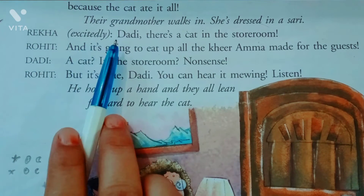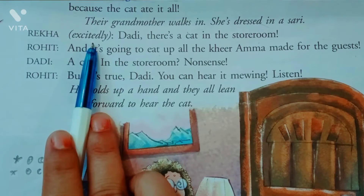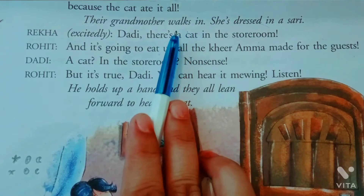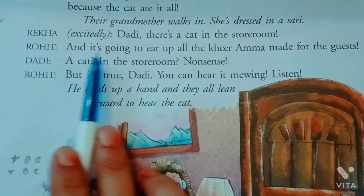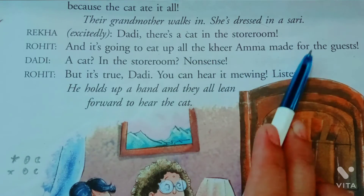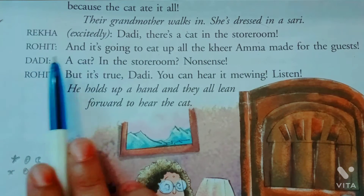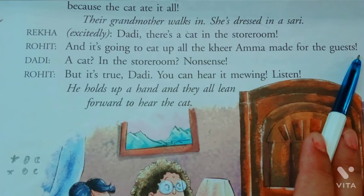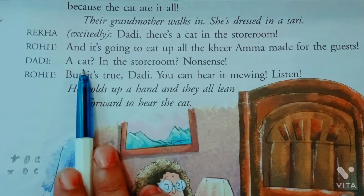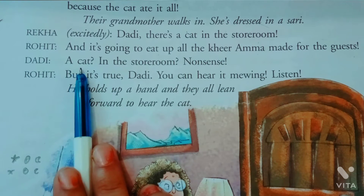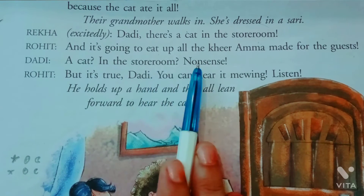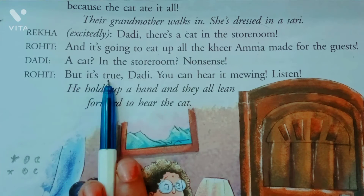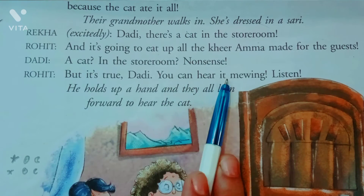Rekha excitedly bolti hai 'Dadi! There is a cat in the storeroom!' Rohit bolta hai 'And it is going to eat up all the kheer Amma made for the guests.' Dadi poochti hai 'A cat? In the storeroom? Nonsense.' Rohit bolta hai 'But it is true, Dadi. You can hear it mewing — listen.'